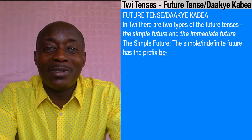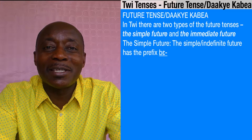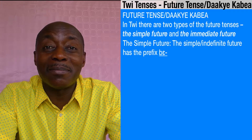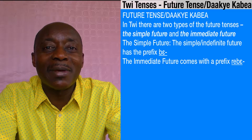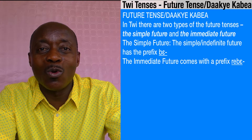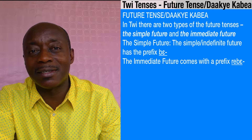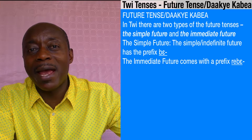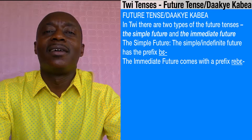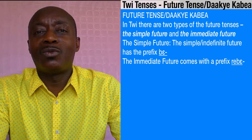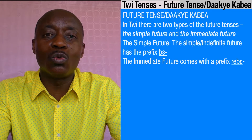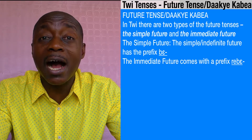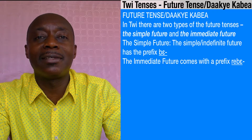With the simple future in Twi, the verb is prefaced with 'be,' whilst with the immediate future the verb is prefaced with 'rebe.' So we have these two prefaces: 'be' and 'rebe.' Now let's take one verb and use it to explain these two types of future tenses.